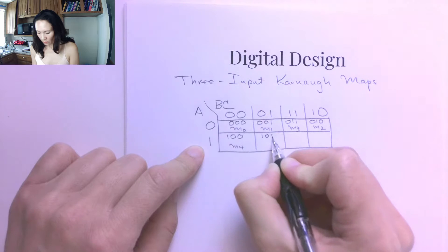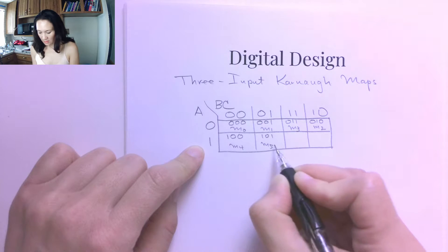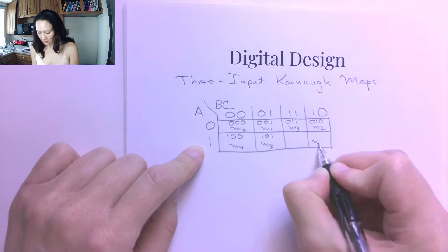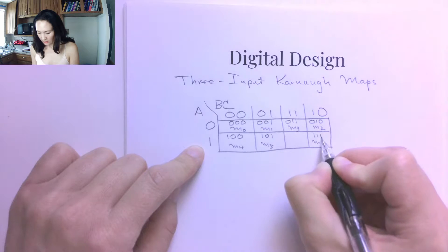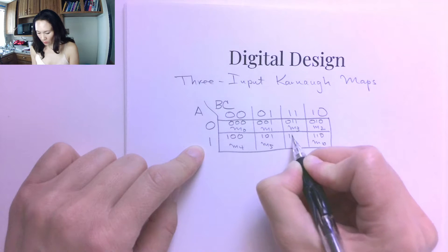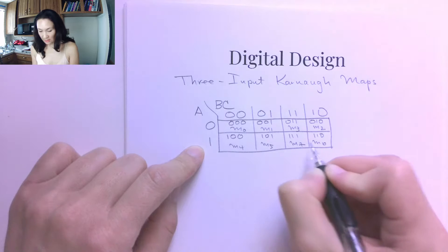This is 1, 0, 1 or min term 5. Now I skip over for min term 6. This is 1, 1, 0. And then I come back 1 for 1, 1, 1 to give me min term 6. I'm sorry, 7.